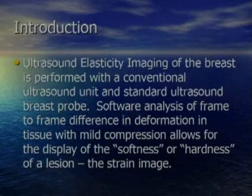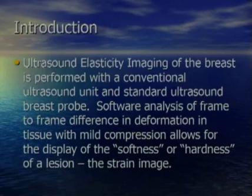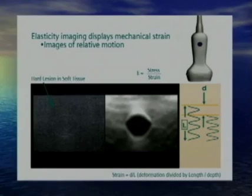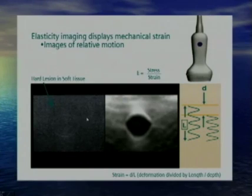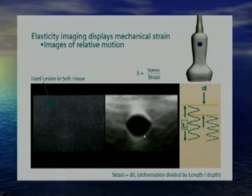Elasticity imaging of the breast is performed with a conventional ultrasound unit and standard breast probes. Software analysis of frame-to-frame differences and deformation of the tissue with mild compression allows display of stiffness — the strain image. Here the B-mode image shows a lesion that is isoechoic to the surrounding background, so it's not very conspicuous. However, with displacement elastography, the lesion is clearly visible because it shows up as hard compared to the soft background.